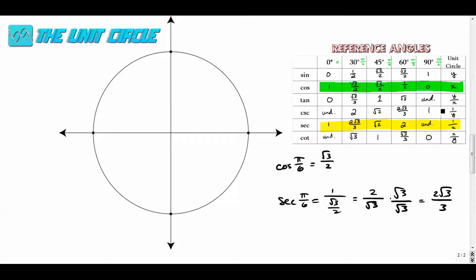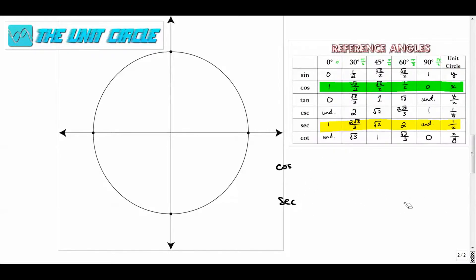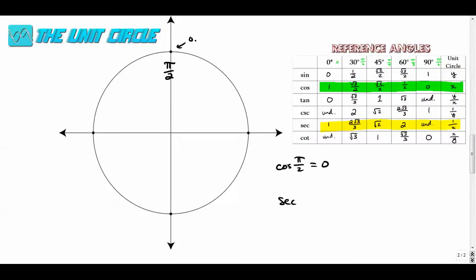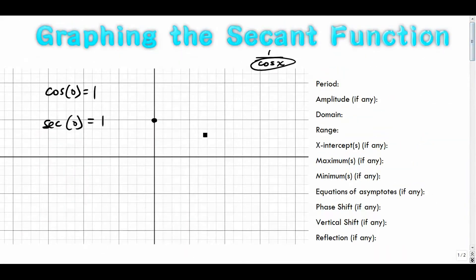The cosine of pi over two is zero — pi over two is up here on the unit circle, that point is (0, 1), and cosine is the x-value. The secant of pi over two is one over the cosine of pi over two, which is undefined. So at pi over two the secant is undefined, which means it has an asymptote — you draw a dotted line there.